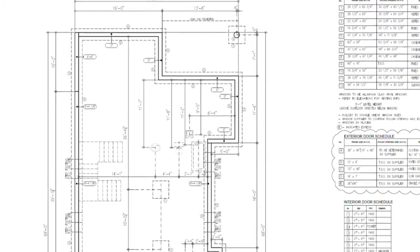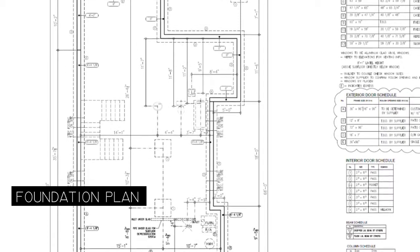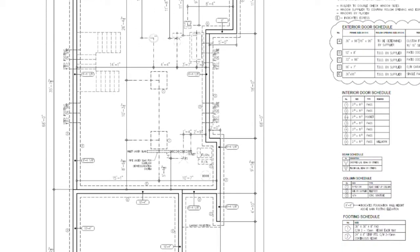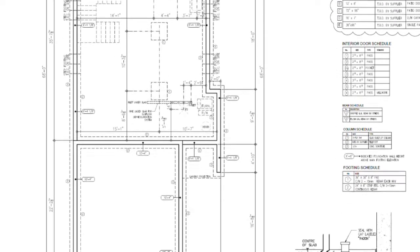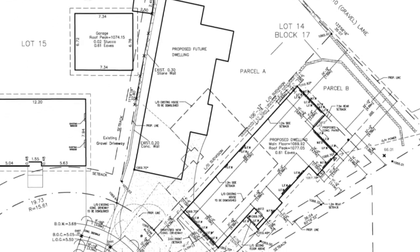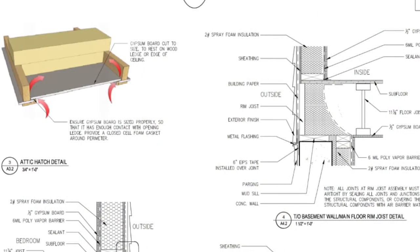We will also need a foundation plan that gives us dimensions and information about foundation type, location and conditions. A site plan should also be included, and that will tell the construction crew where to locate the building within the site limits. And that's not all — for each of these drawings, there will be a set of details for specific items that need to be addressed.